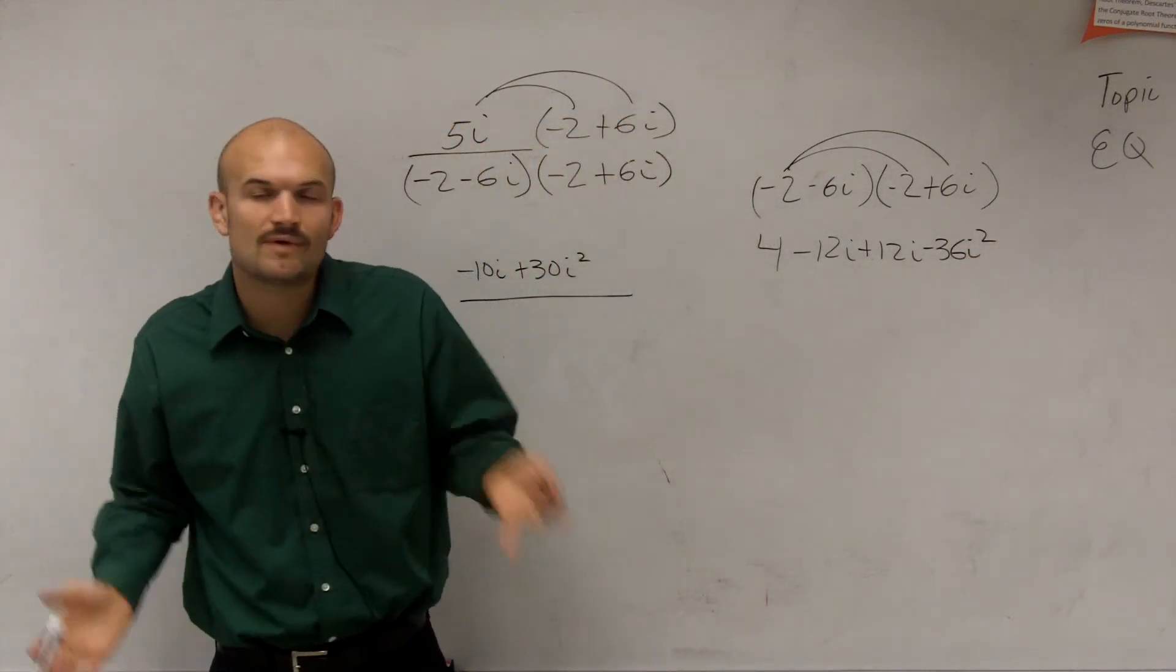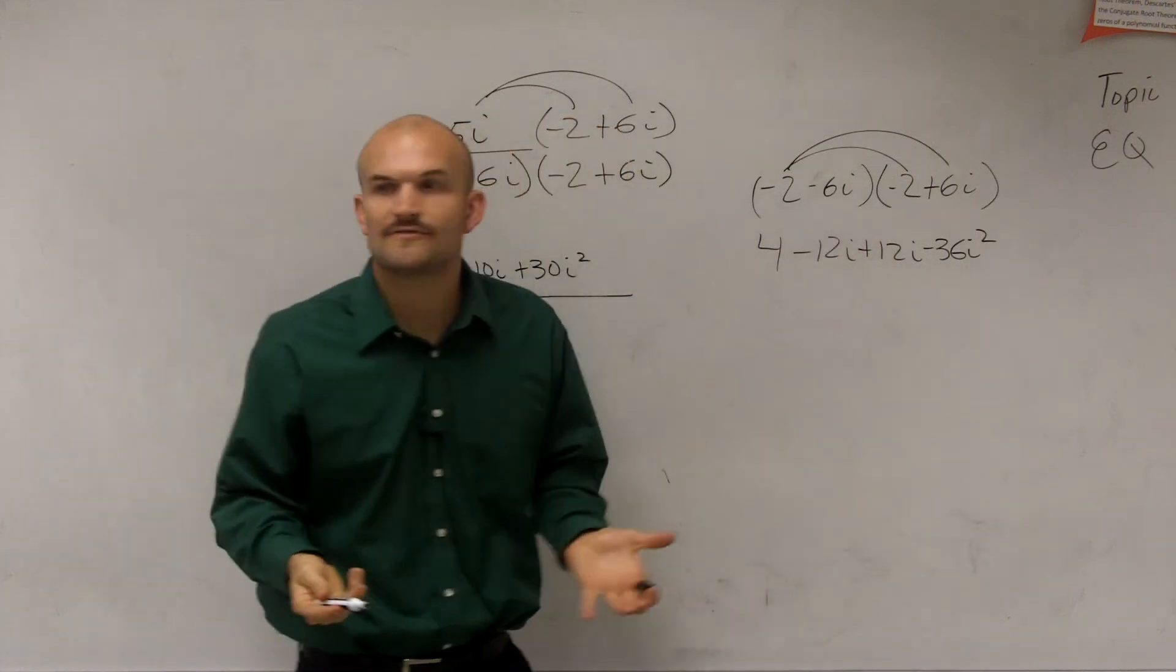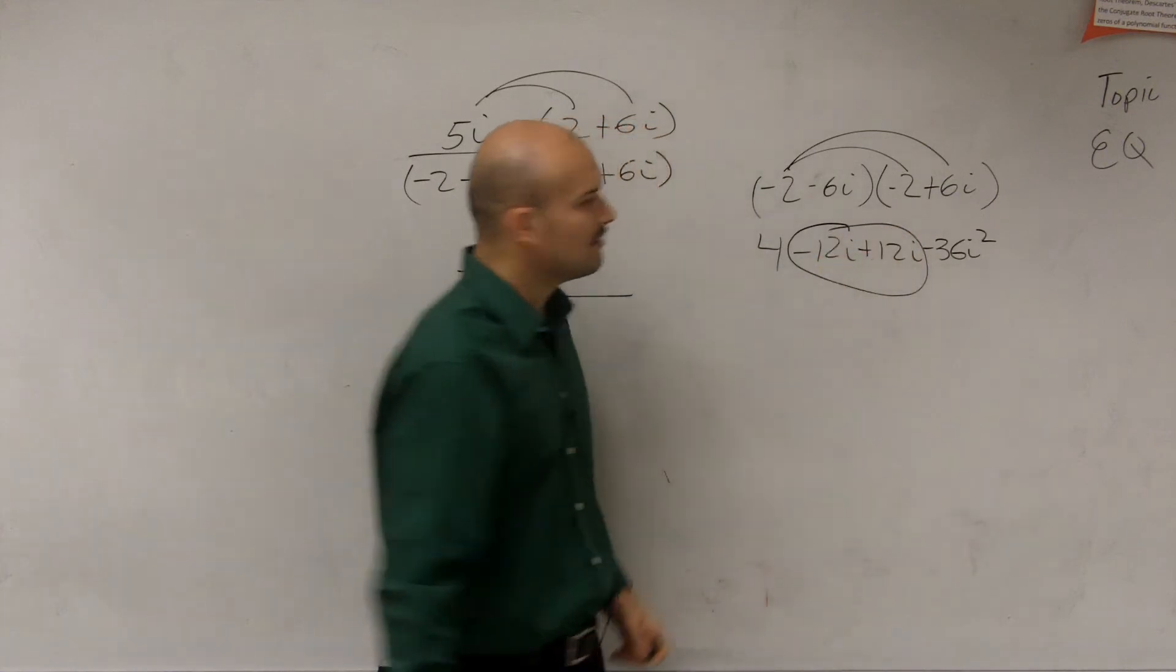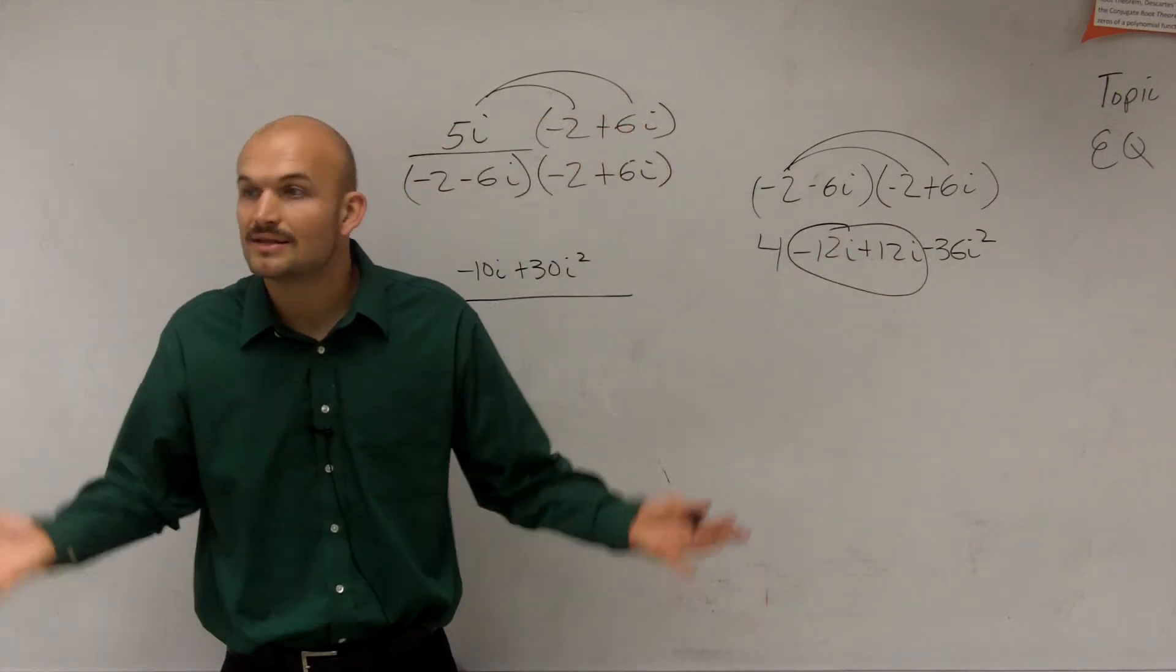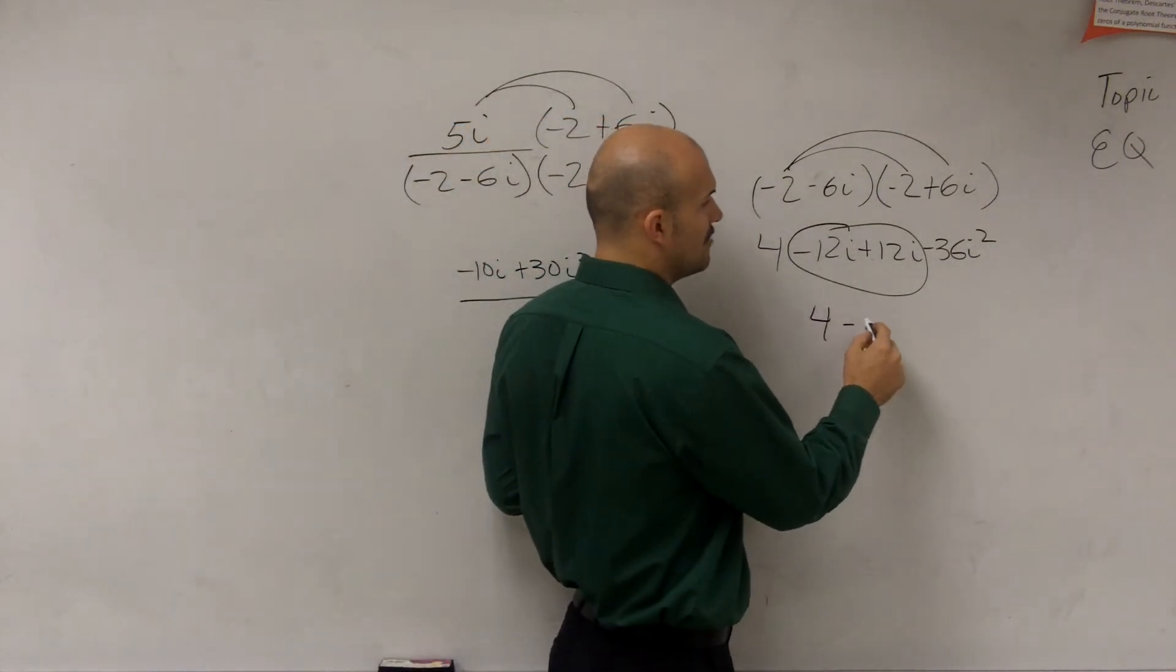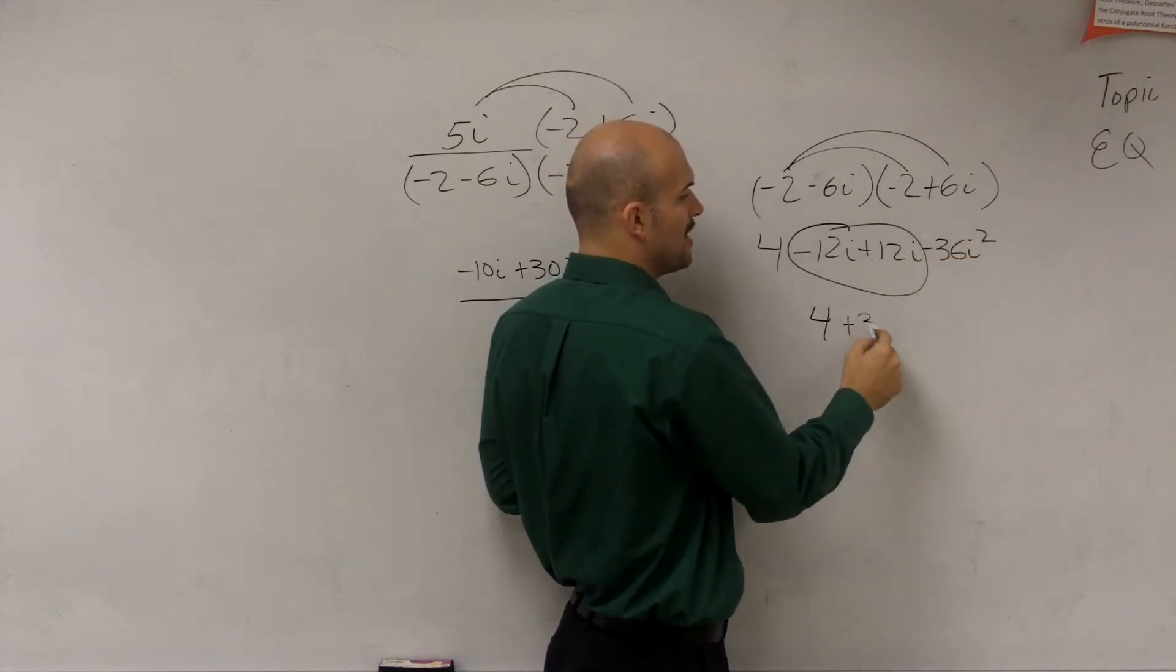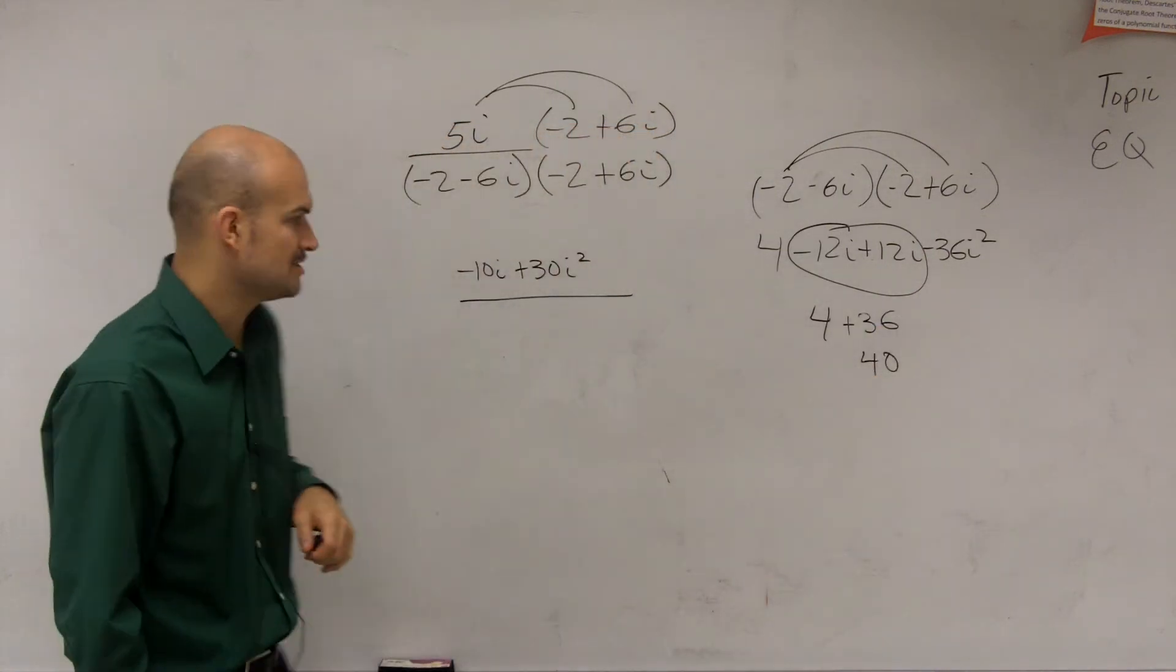Now, it's important. The reason why we multiply by our conjugate pair is because what that produces is a difference of two squares. And you guys notice that what happens to my middle terms when you multiply by conjugate pairs? They cancel, they will add up to zero. So therefore, 4 minus, well, i squared we can represent as negative 1. Negative 1 times negative 36 is positive 36. So we end up with actually 40 as your denominator.